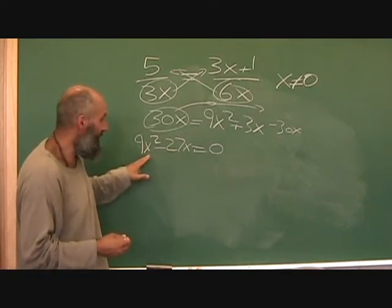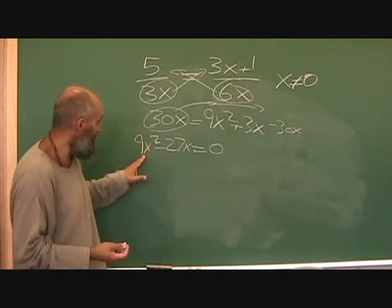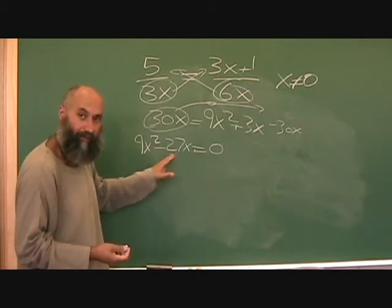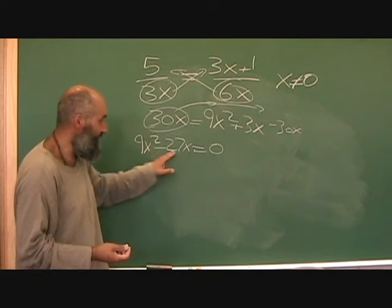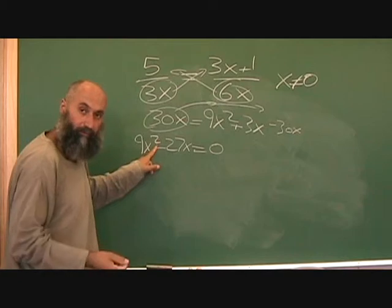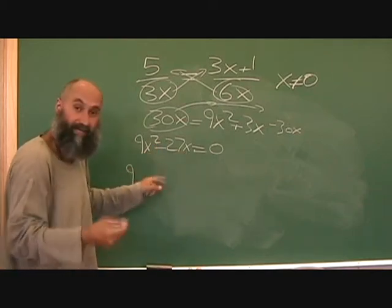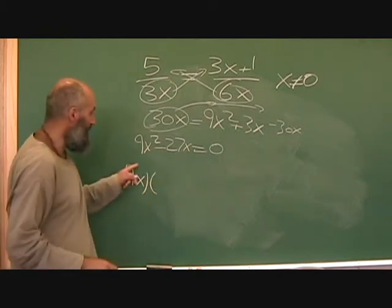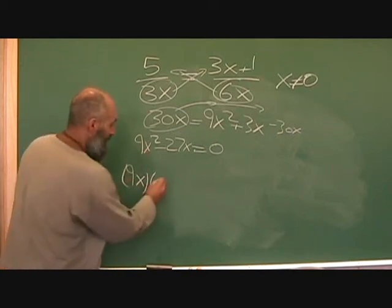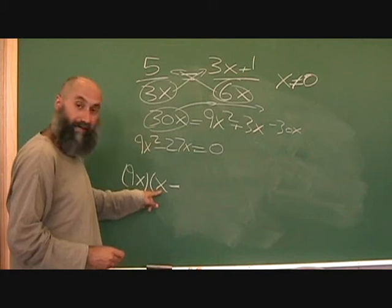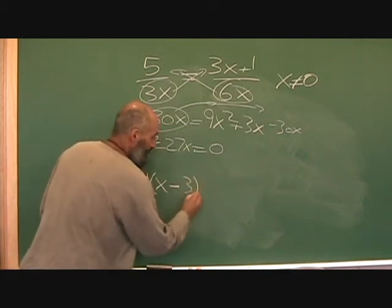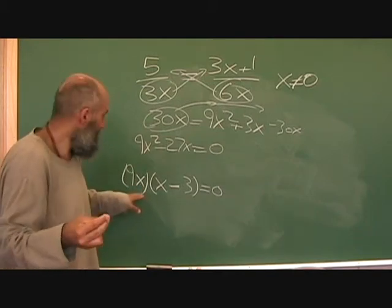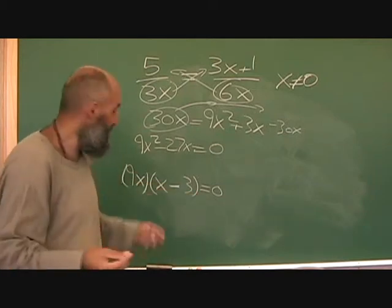To find the GCF: we have 9 and 27 — taking out 9 leaves 1 and 3 respectively, so the greatest common factor is 9. We also have x-squared and x — since x-squared is two x's, we can take out one x from both. So 9x comes out. What's left: 9x times x gives x-squared, and 9x times 3 gives 27x. So we get 9x(x − 3) equals zero.